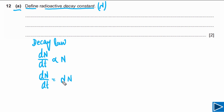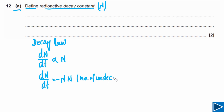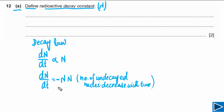We also use a negative sign in front of lambda. This negative sign tells us that the number of nuclei in the sample decreases with time — the number of undecayed nuclei decreases with time. If you sketch a graph between N and t, the gradient of the graph will be negative.